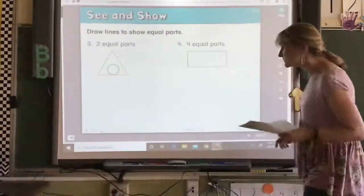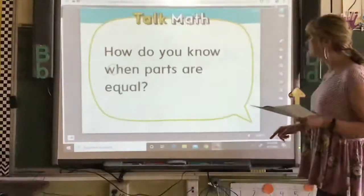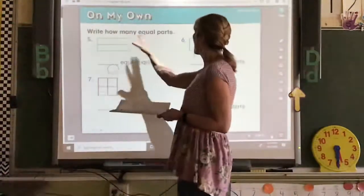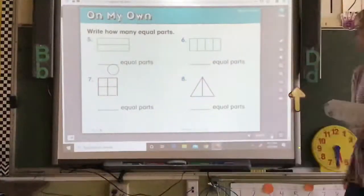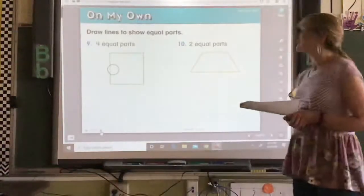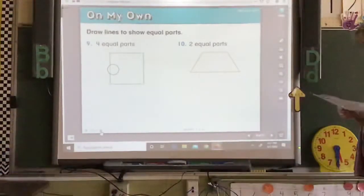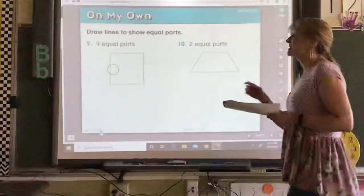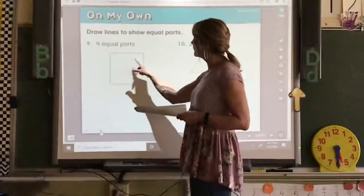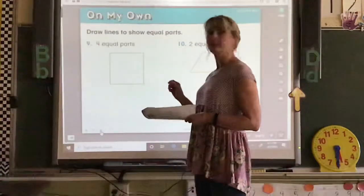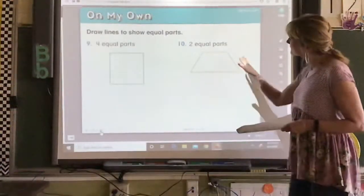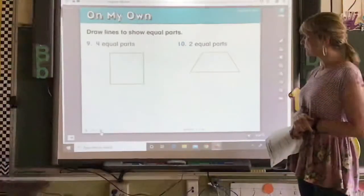Flip it over. And they want you to write how many equal parts. On five, six, seven, and eight. They've already got them divided for you. And then on nine and ten, they want you to draw lines. So they want you to draw lines to show four equal parts. That can be done in several ways. But you want to be careful and make sure that each part is equal to the other part. And in this one, they want you to make two equal parts.